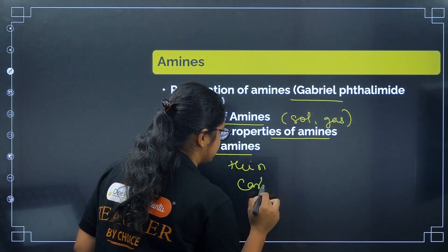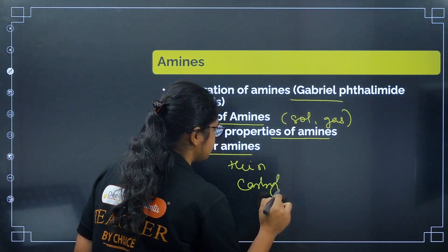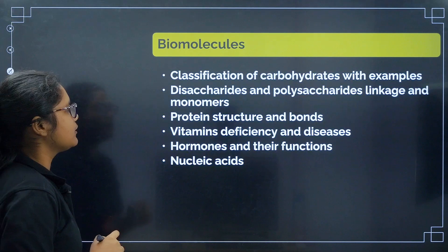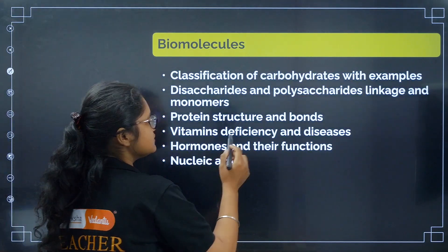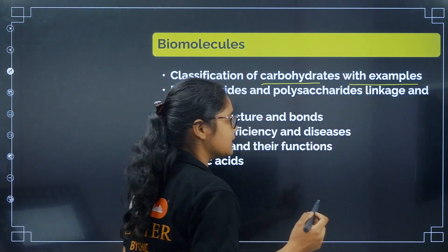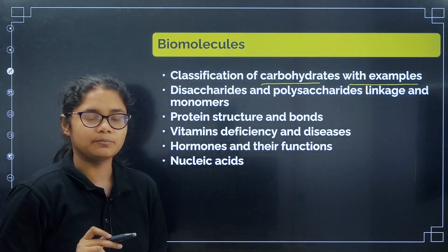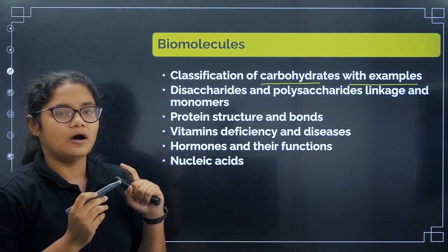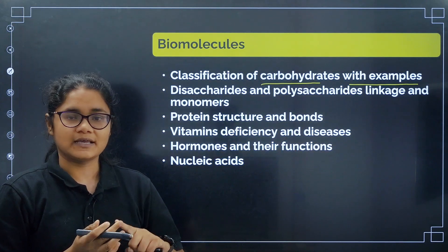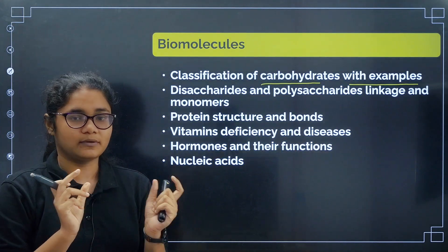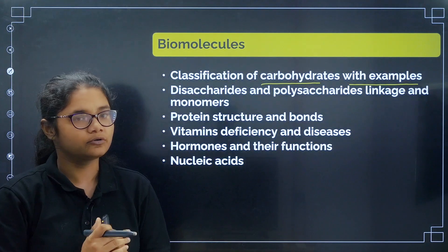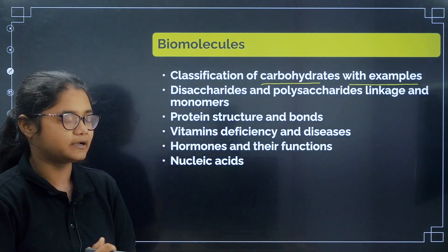Also revise the tests for amines: the Hinsberg test and the carbylamine test. Now quickly in Biomolecules: cover classification of carbohydrates with examples — monosaccharides, disaccharides, and polysaccharides — their monomer units and the bonds connecting them.